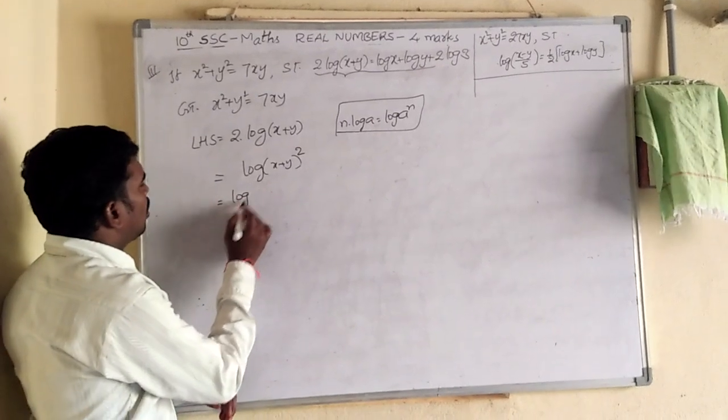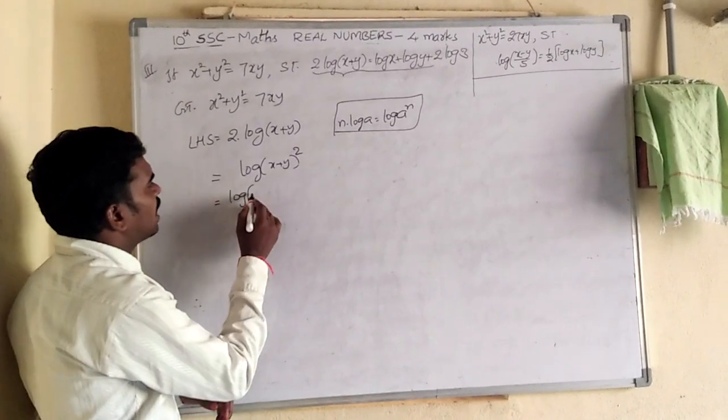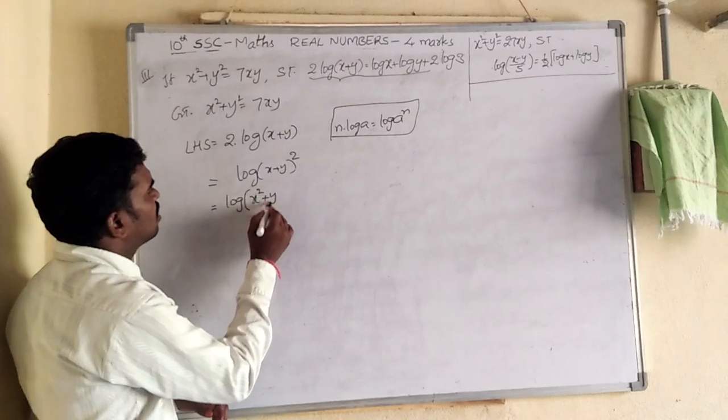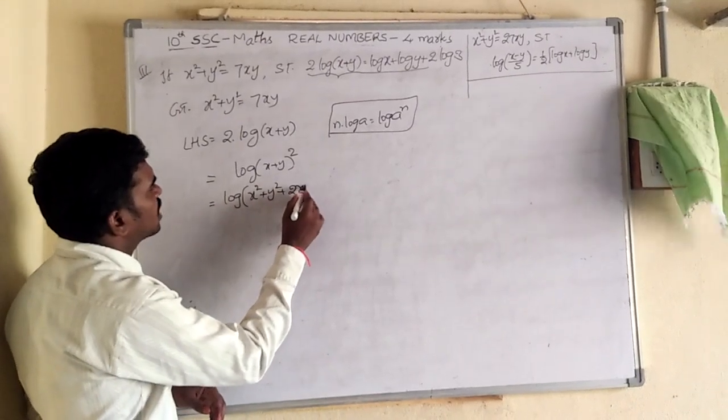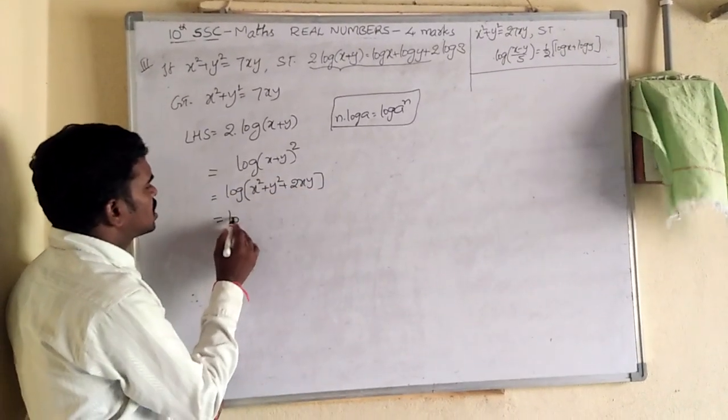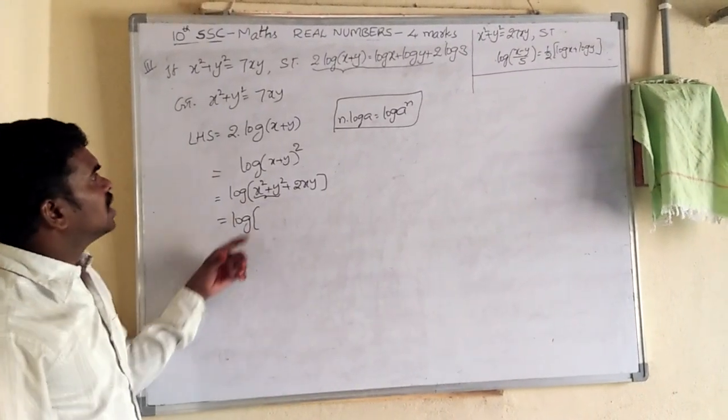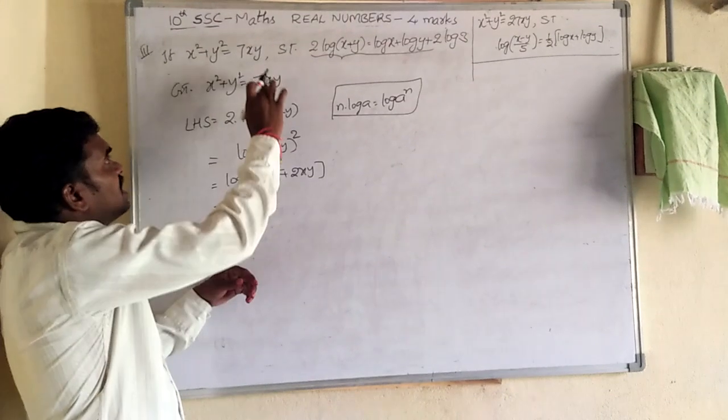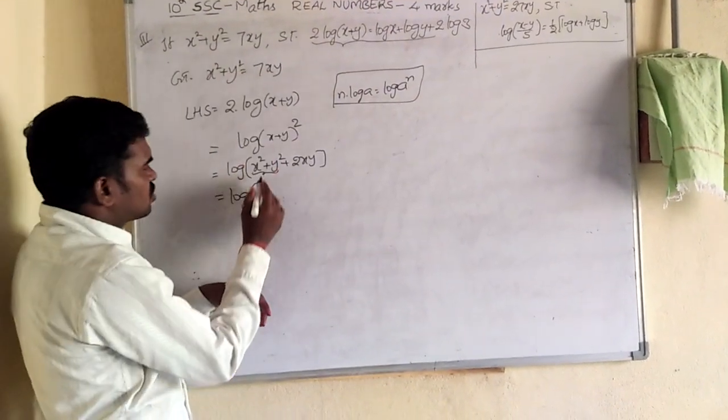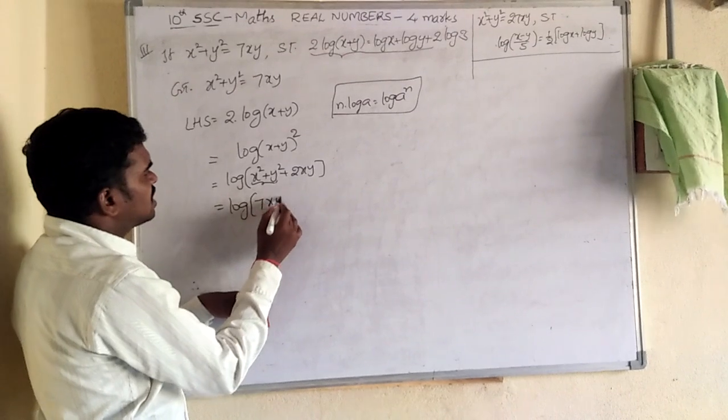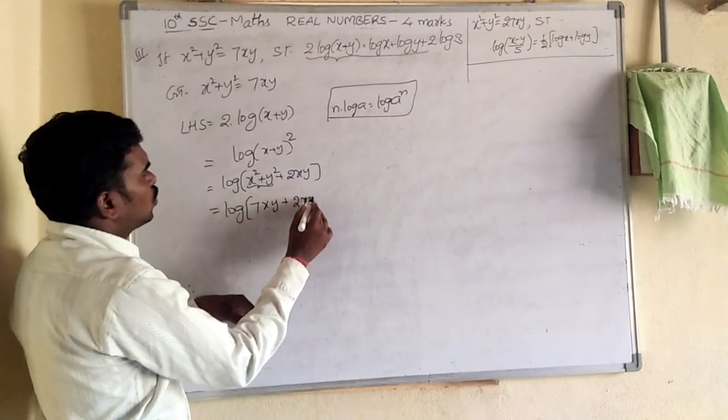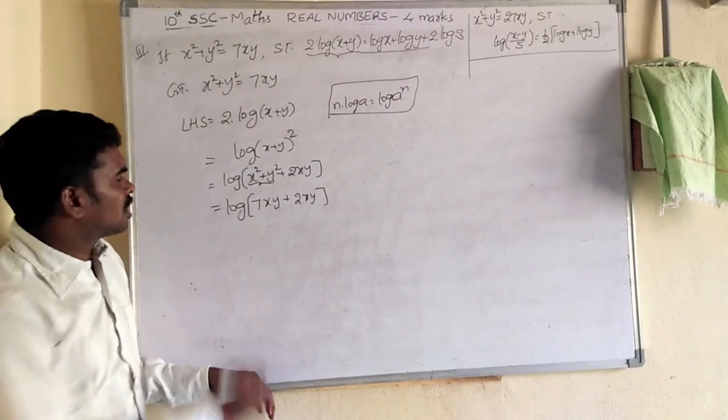So now this is called log of, now x plus y full square, means x square plus y square plus 2xy. So in this log of, what is x square plus y square? x square plus y square is given, x square plus y square equal to 7xy. So instead of x square plus y square, we can write 7xy. Then 2xy as it is.